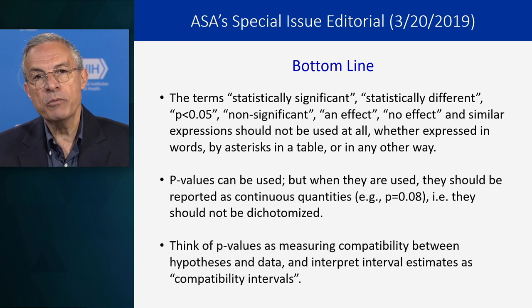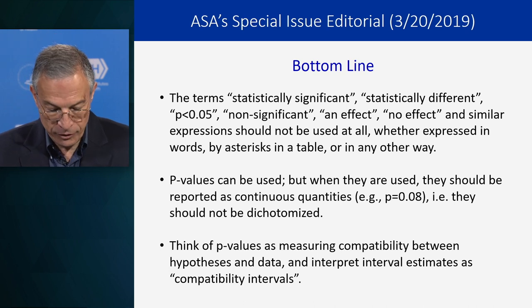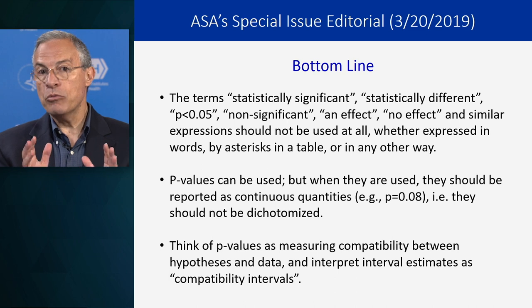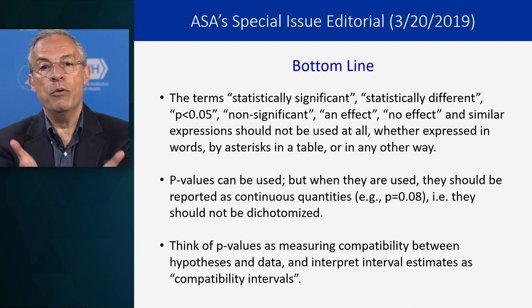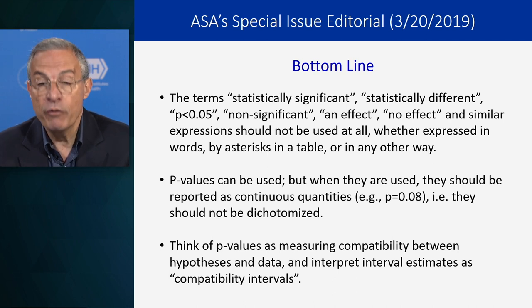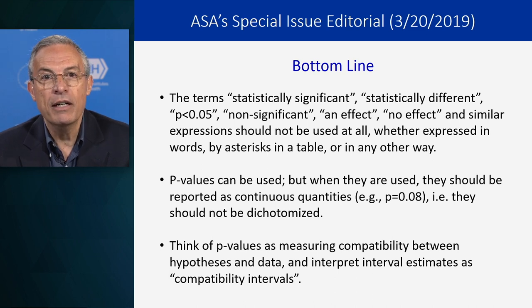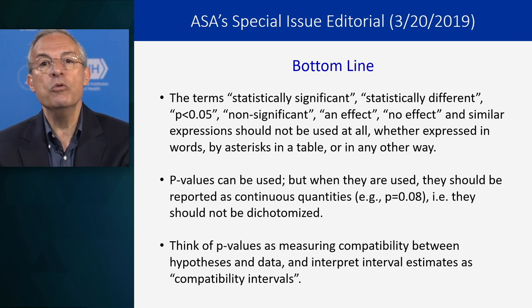When p-values are used, they should be reported as a continuous quantity — give the value of the p-value, not a threshold. They should not be dichotomized; you should not have a threshold and say yes or no based on greater or less than. Give the value. Think of p-values as measuring compatibility between hypotheses and data. It's easy to say but really hard because we have to change the whole thinking. Even though I'm very supportive of this special issue, it is hard. It's going to take time and effort, but we have to move in that direction.